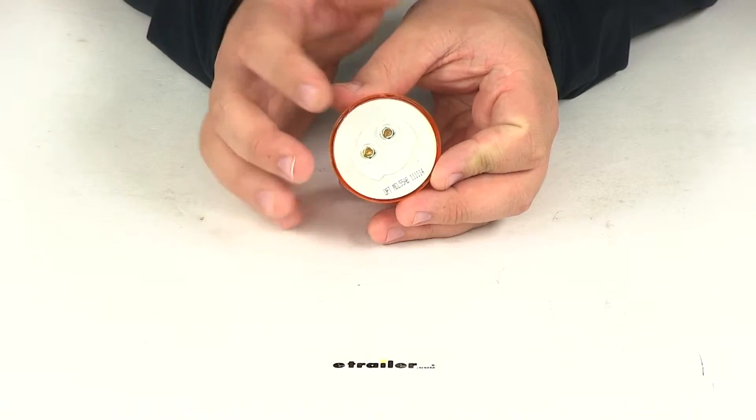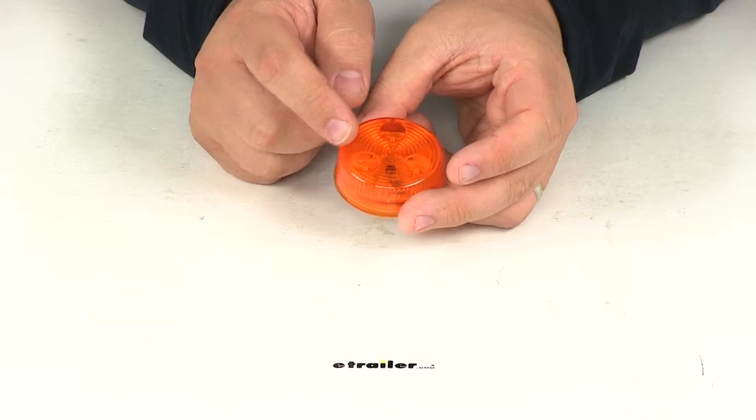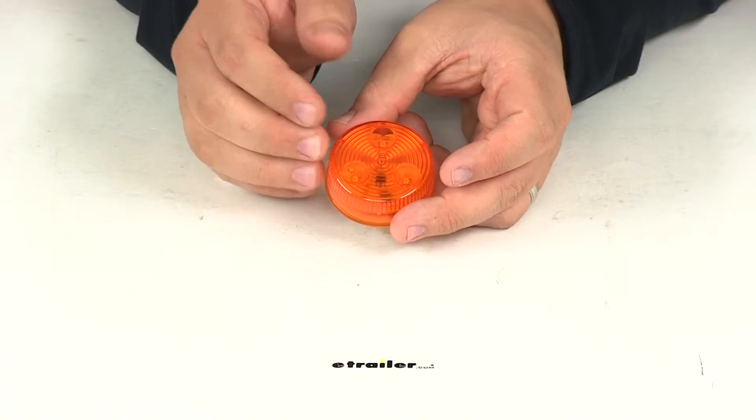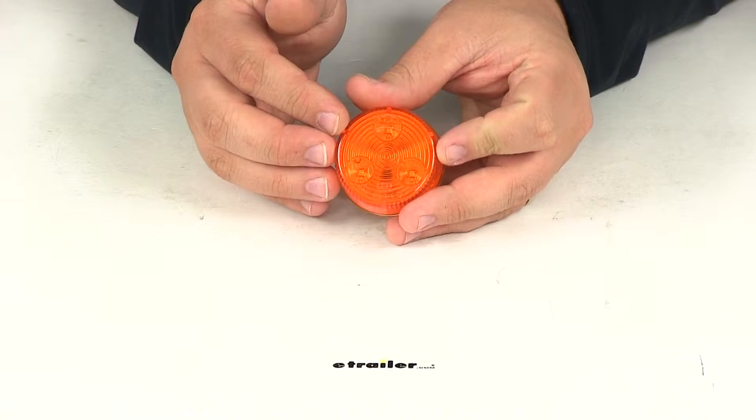The lens and the base are going to be made from a polycarbonate material so they're going to be very strong and durable. This unit is going to contain three LEDs so it's going to have the multi diode design which when hooked up to power is really going to optimize our light output.